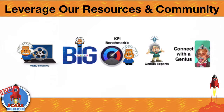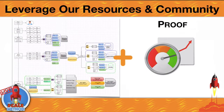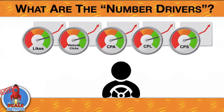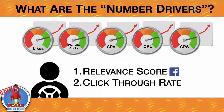You can leverage our resources and community anytime. The main thing is you want to have a documented plan and proof — know what your plan is, what the numbers are, and how to adjust them. Do you know your numbers? On Facebook, do you know how much it costs to get an average like, an average website click, a cost per lead, or your average cost per sale? There's a driver to these main numbers, and it's critical to understand what influences those drivers. The number one thing to focus on is your relevance score on Facebook — the more relevant your content is, everything else will fall into place.